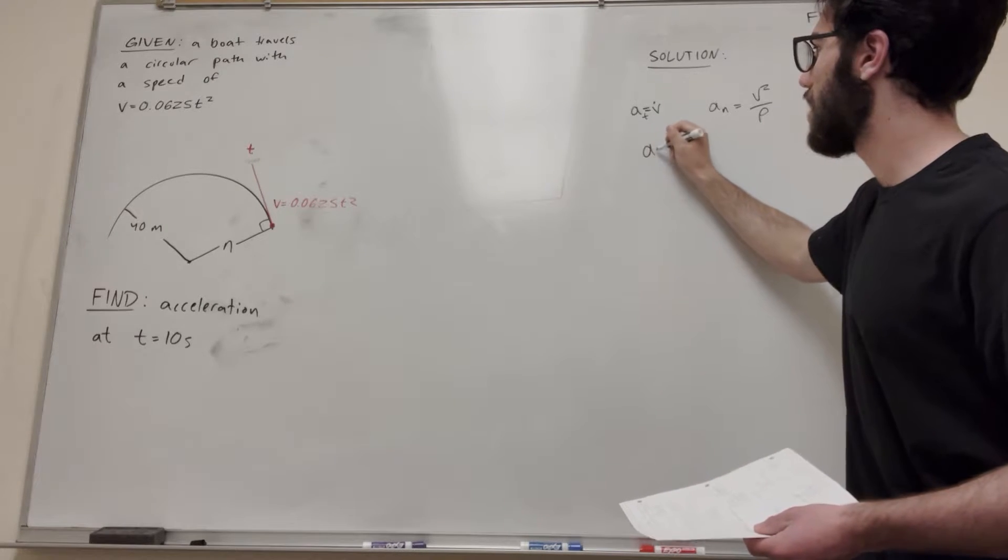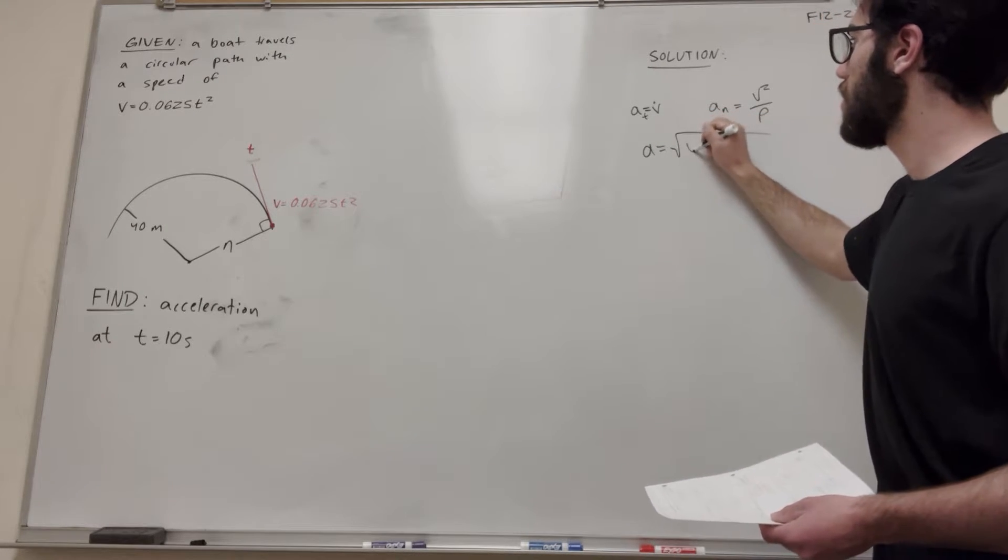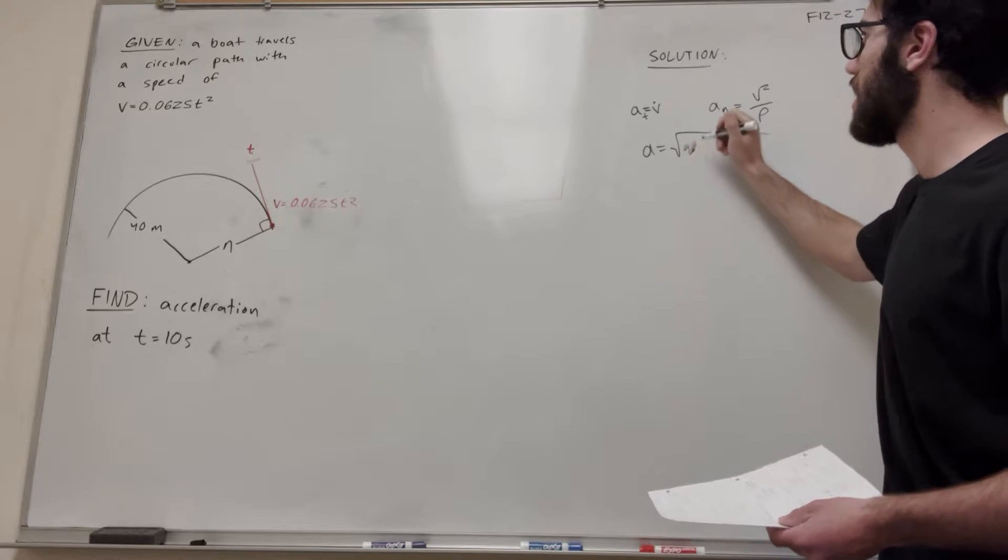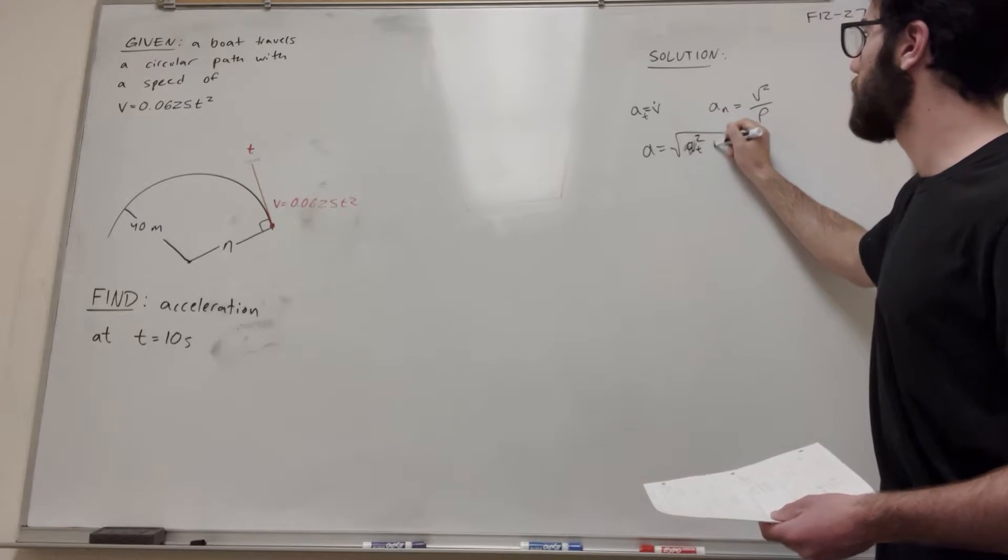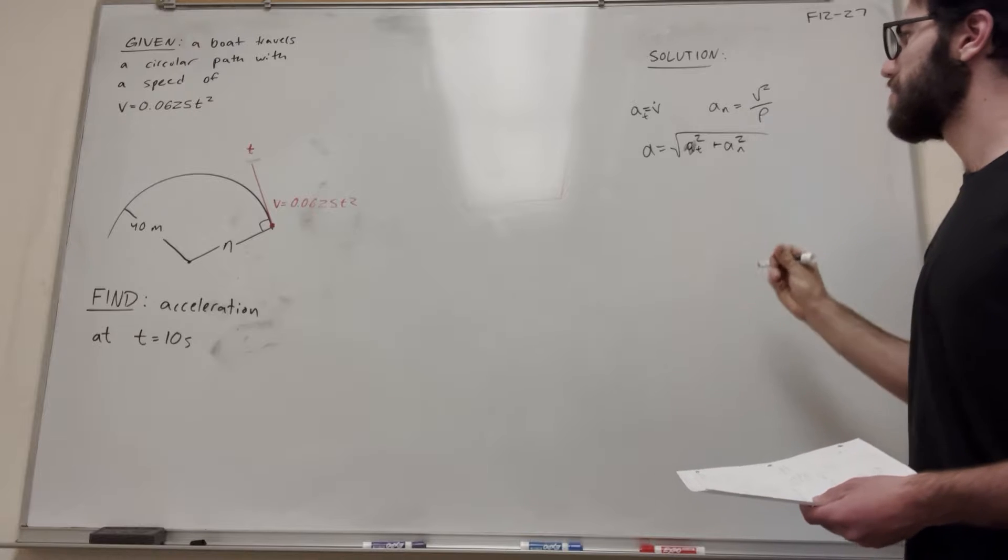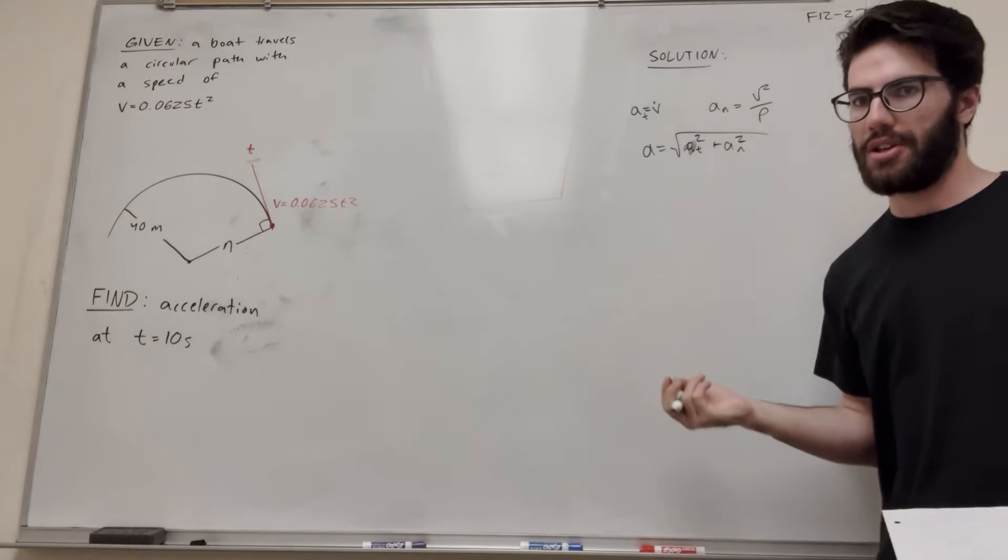So we have these two equations, and if we want to find the magnitude of the acceleration, we have to take the square root of both of them. So it's going to be at squared plus an squared. These are the three equations we're going to use to solve this problem.